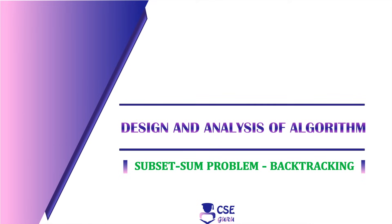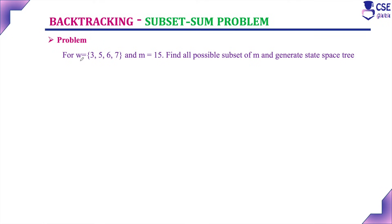Welcome to CSE Guru. In this session, we will discuss one more example to implement the subset sum problem using backtracking technique. The problem is W = {3, 5, 6, 7} and the subset sum we need to find is M = 15. Find all possible subsets of M and generate the state space tree.